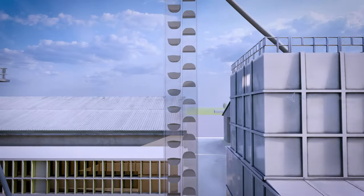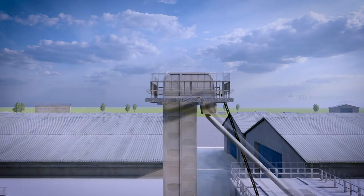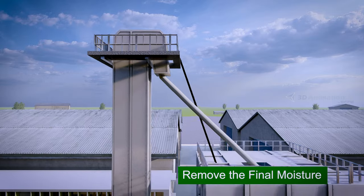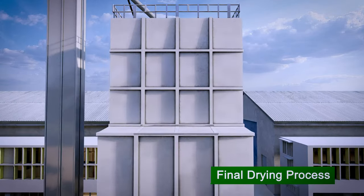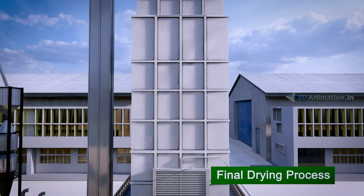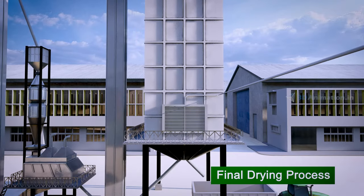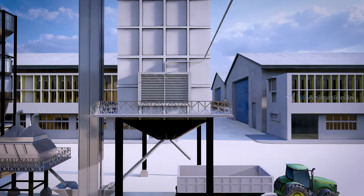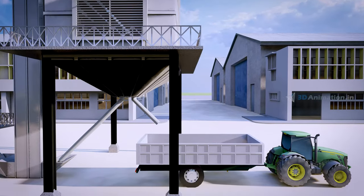The paddy is discharged to MDT dryer to remove the final moisture. Once again, the drying process takes place inside the dryer. Finally, the dried paddy is delivered to the rice process.